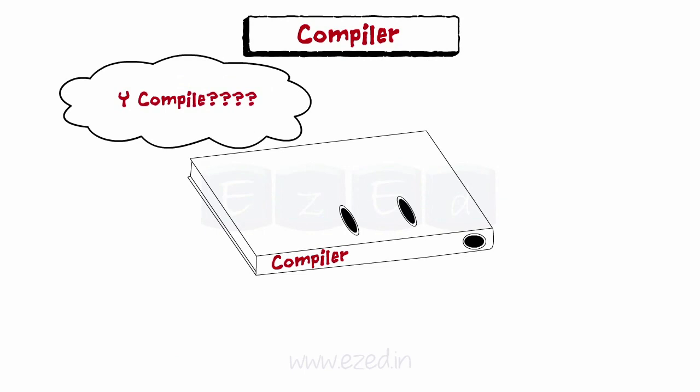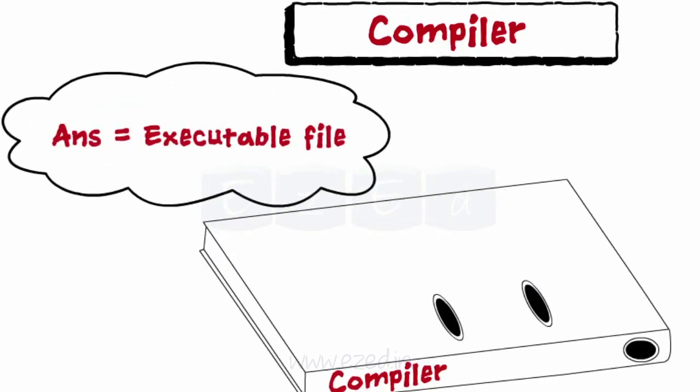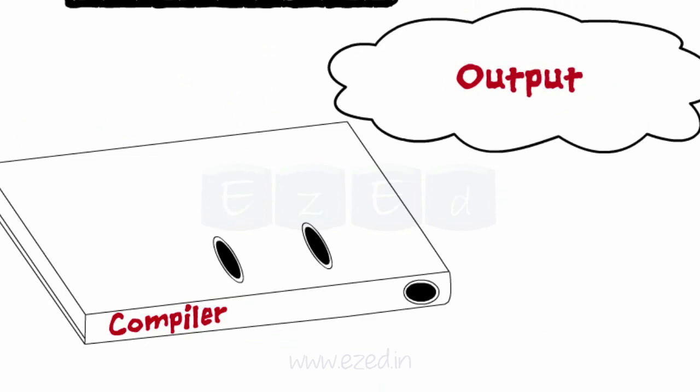The reason for compiling a program is to get an executable file through which the program can be executed and output can be viewed.